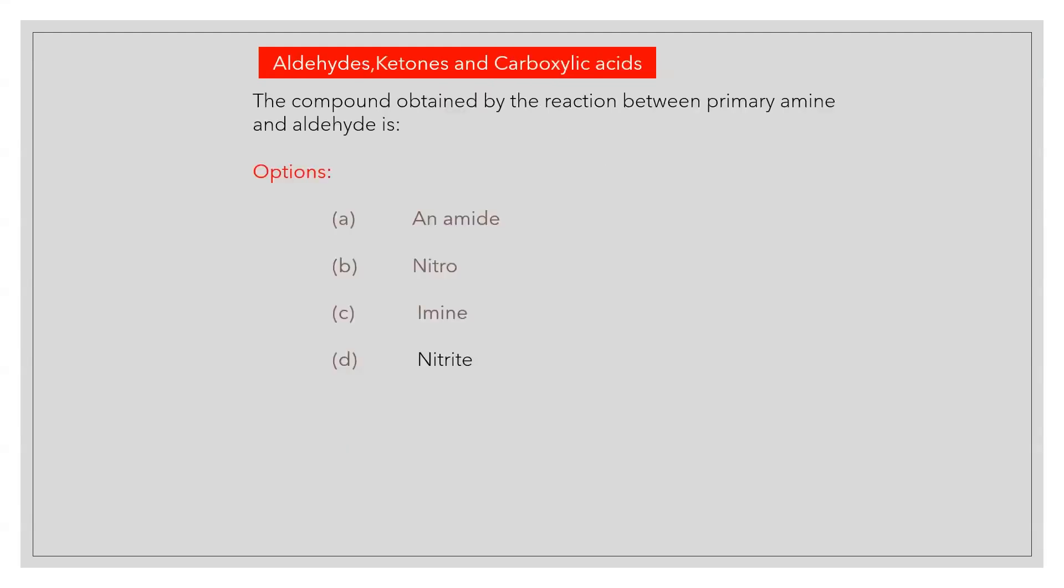The compound obtained by the reaction between primary amine and aldehyde is? Answer D: Schiff base.